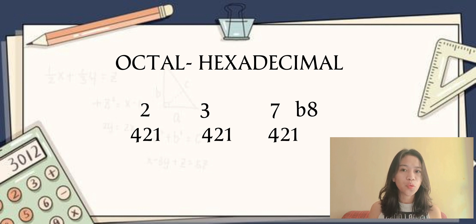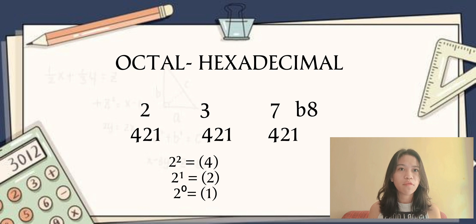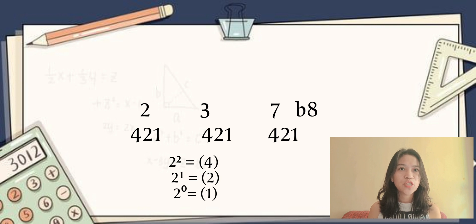To get the 4, 2, 1, we have 2 raised to the power of 2, which is 4; 2 raised to the power of 1, which is 2; and 2 raised to the power of 0, which is 1.